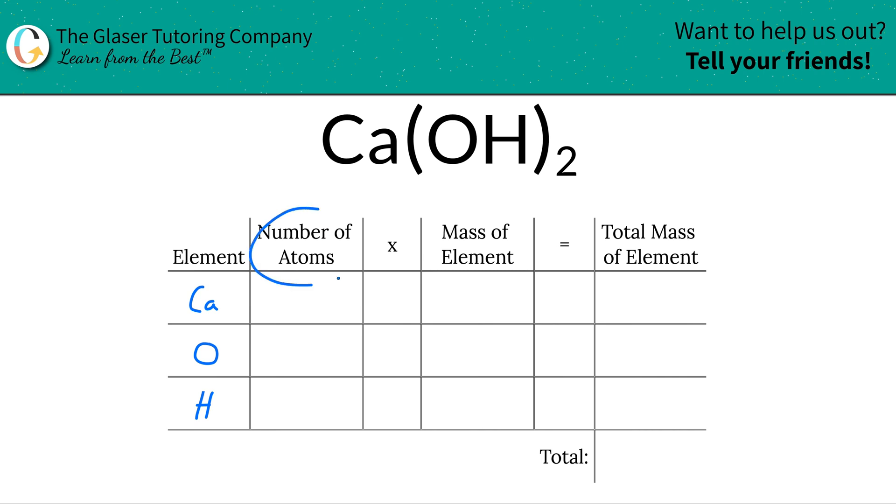Next thing is to identify the number of atoms, and that's where the subscripts come into play. So the subscript at the bottom of calcium, it's not a zero, it is a one. If nothing's written in there it is a one, that means we have one atom of calcium.